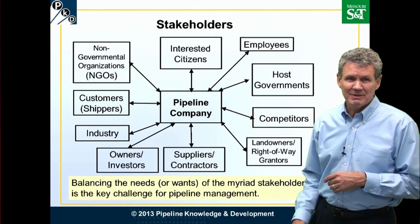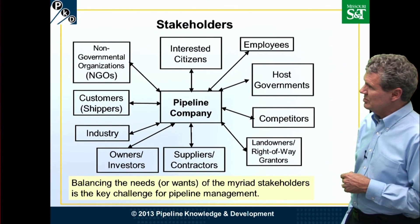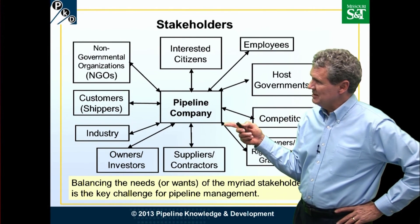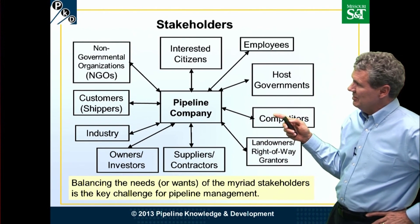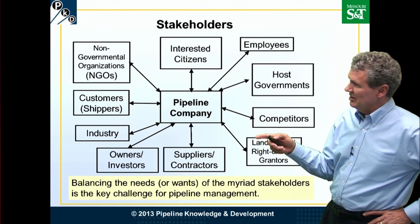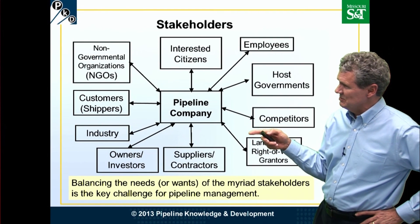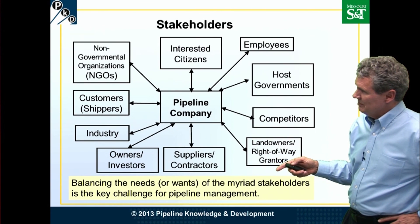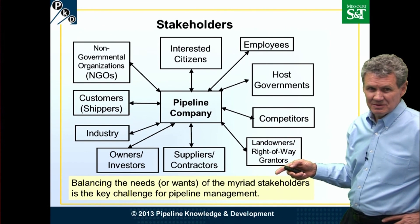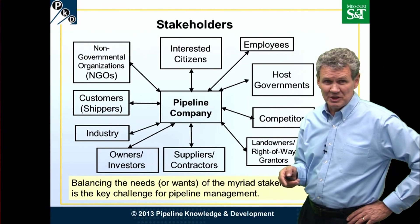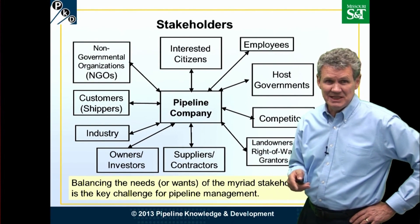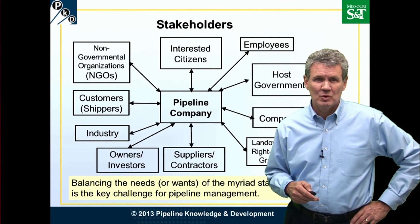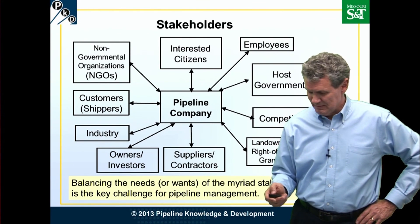Since we're talking about stakeholders, we should raise the question of who are those stakeholders? Here's a drawing that shows the pipeline company in the middle with a number of different stakeholders around it — non-government organizations, interested citizens, customers and shippers, the industry. Balancing the needs — or perhaps more appropriately the wants, though they might actually be needs — of all these stakeholders is a key challenge for pipeline management and for designing pipeline systems.